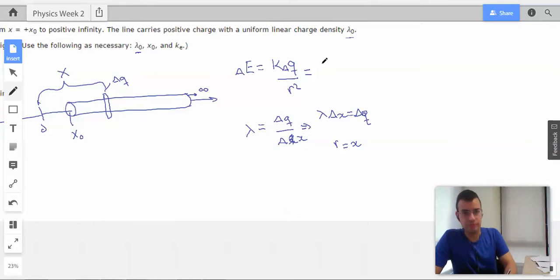So throw things together. See if it works. So we're going to use k lambda delta x over x squared, which I'm going to then rewrite as k lambda x to the negative second delta x.